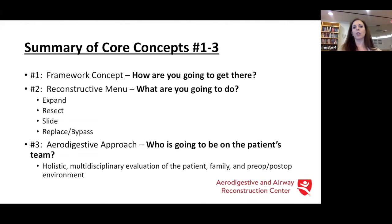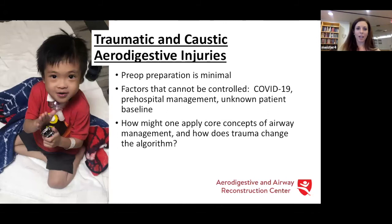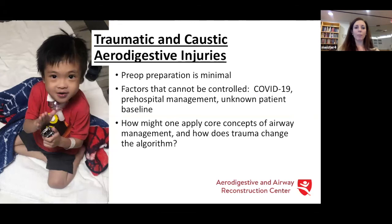Now we're going to transition to trauma and use these same concepts to evaluate these patients. The main difference in traumatic and caustic aerodigestive injuries is that pre-op preparation is minimal — they don't plan to swallow lye; they just do it because they're kids. There are many factors that can't be controlled: they may have COVID, they may have been managed well or not before they get to you, and they have an unknown baseline. Even though they swallowed a foreign body, they may also have complete tracheal rings or laryngomalacia. So it's important to keep an open mind and think about how to apply the core concepts of airway management while recognizing that trauma may change that algorithm.